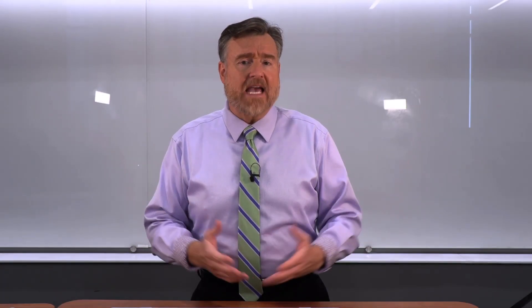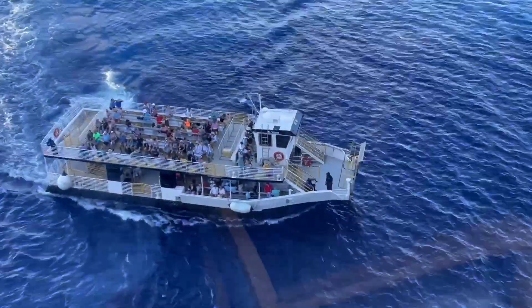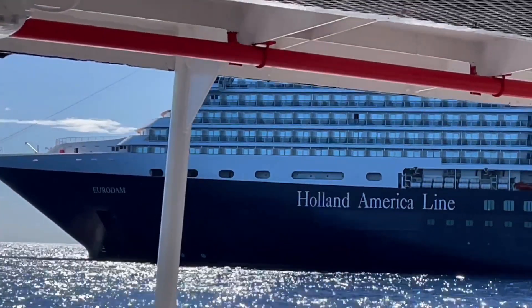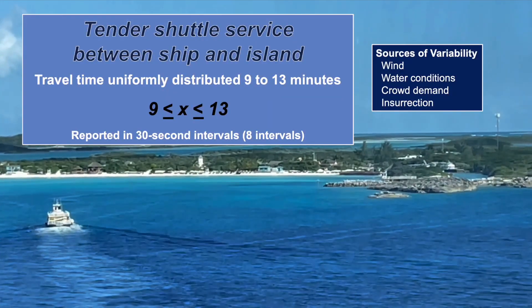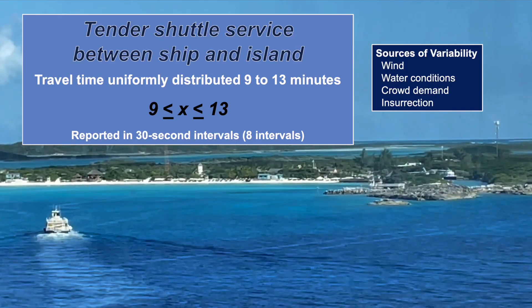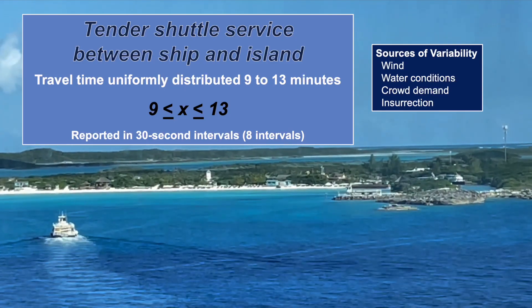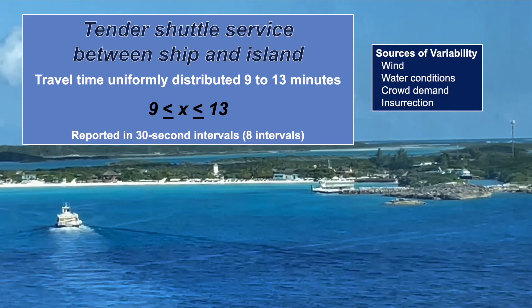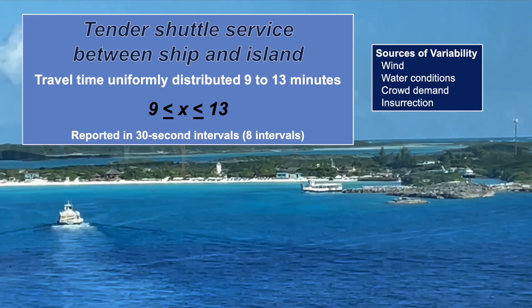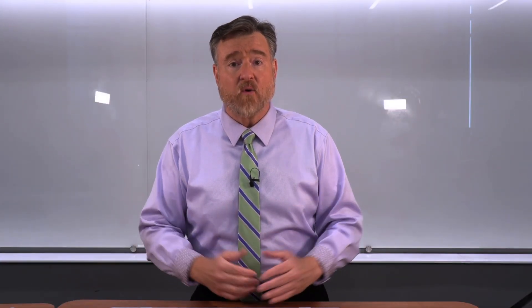Let's use an example of a uniform probability distribution and see how it works. The cruise ship runs a tender shuttle service between the ship and a private island. The travel time is uniformly distributed between nine to 13 minutes. When you jump on that shuttle, it will take between nine and 13 minutes to arrive. These times are reported in 30-second intervals, or a total of eight intervals over the four minutes.